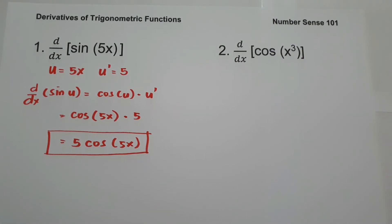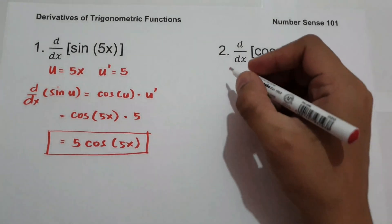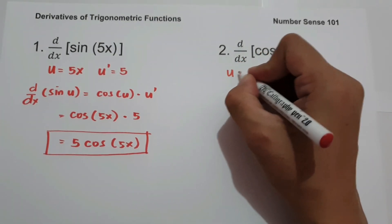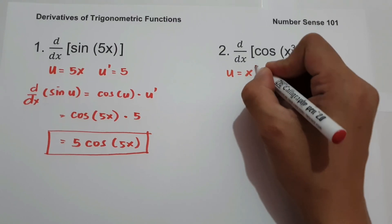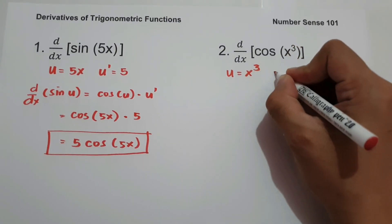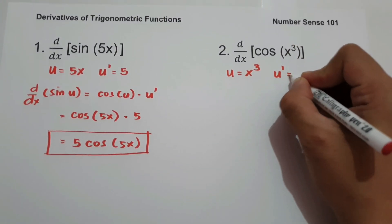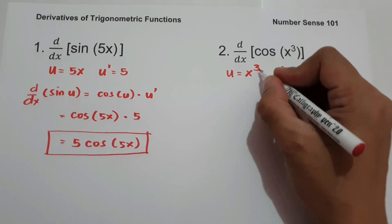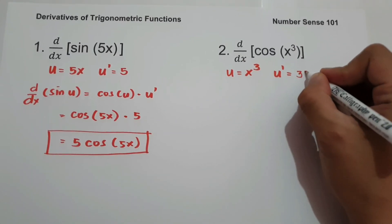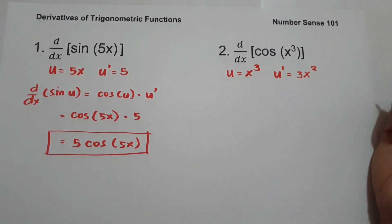On number 2, what is the derivative of cos(x³)? Let us identify the value of u, which is x³. And u' is the derivative of x³, which is 3x².